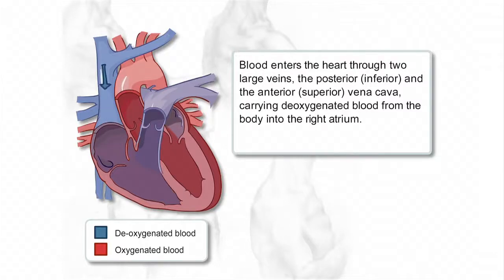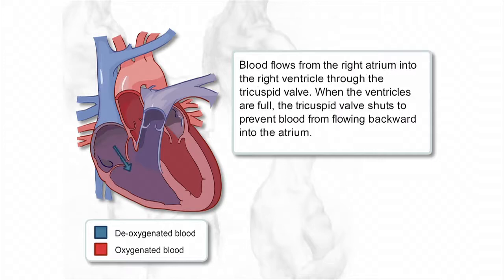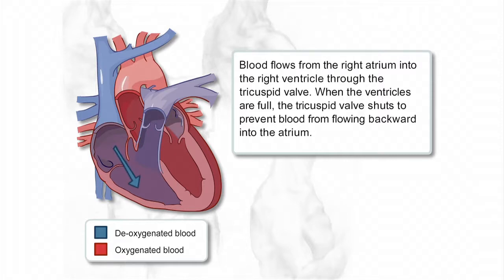Blood enters the heart through two large veins, the posterior and the anterior, carrying deoxygenated blood from the body into the right atrium. Blood flows from the right atrium into the right ventricle through the tricuspid valve. When the ventricles are full, the tricuspid valve shuts to prevent blood from flowing backward into the atrium.